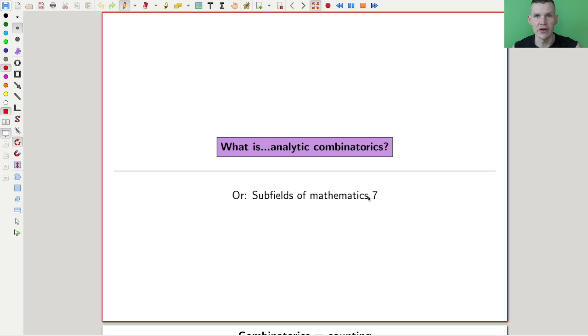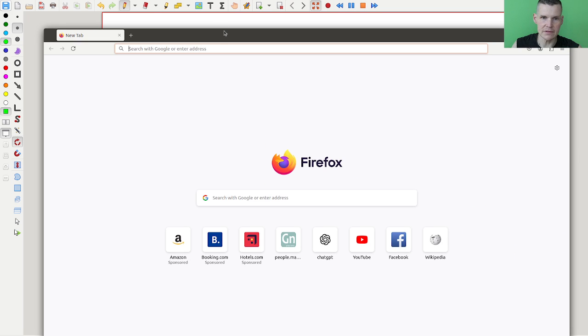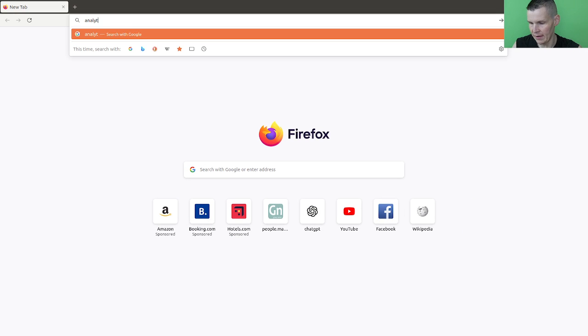Okay, welcome everyone to this continuation of what are my favorite fields, subfields, whatever you want to call them, of mathematics. My very biased collection, because favorite is always very biased. And we are already with number seven, and this one is analytic combinatorics. So if you Google analytic combinatorics, let's try to do that live. Pull up my little browser here. Analytic combinatorics.